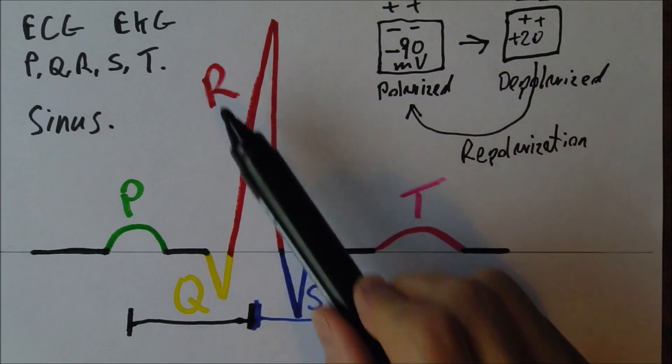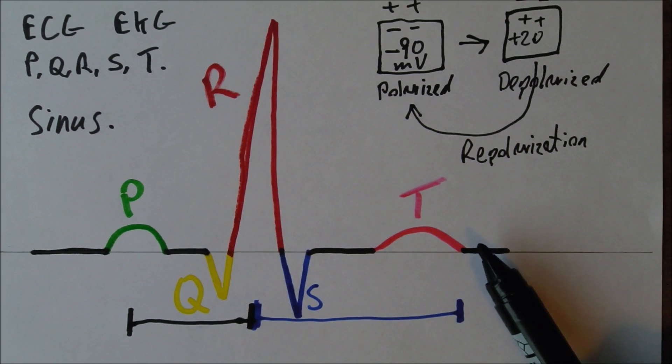If you've got a P, Q, R, S, T in the right order and it's fairly regular. But the rate is above 100. That is a sinus tachycardia. They're the three normal rhythms. Sinus bradycardia, sinus rhythm, sinus tachycardia.